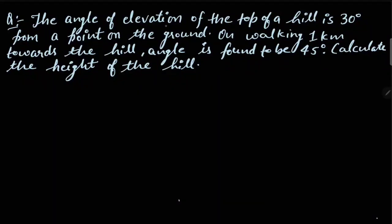The angle of elevation of the top of a hill is 30 degrees from a point on the ground. On walking one kilometer toward the hill, the angle is found to be 45 degrees. Calculate the height of the hill.